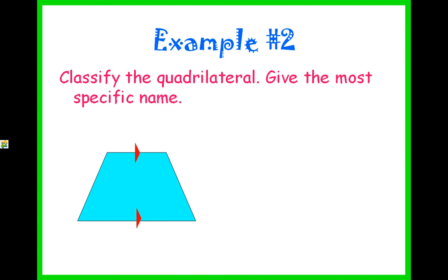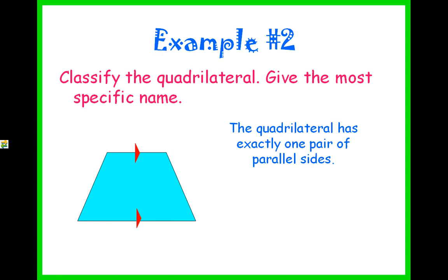Example number two: classify the quadrilateral and give it the most specific name. This quadrilateral has exactly one pair of parallel lines, so the quadrilateral with that description is a trapezoid.